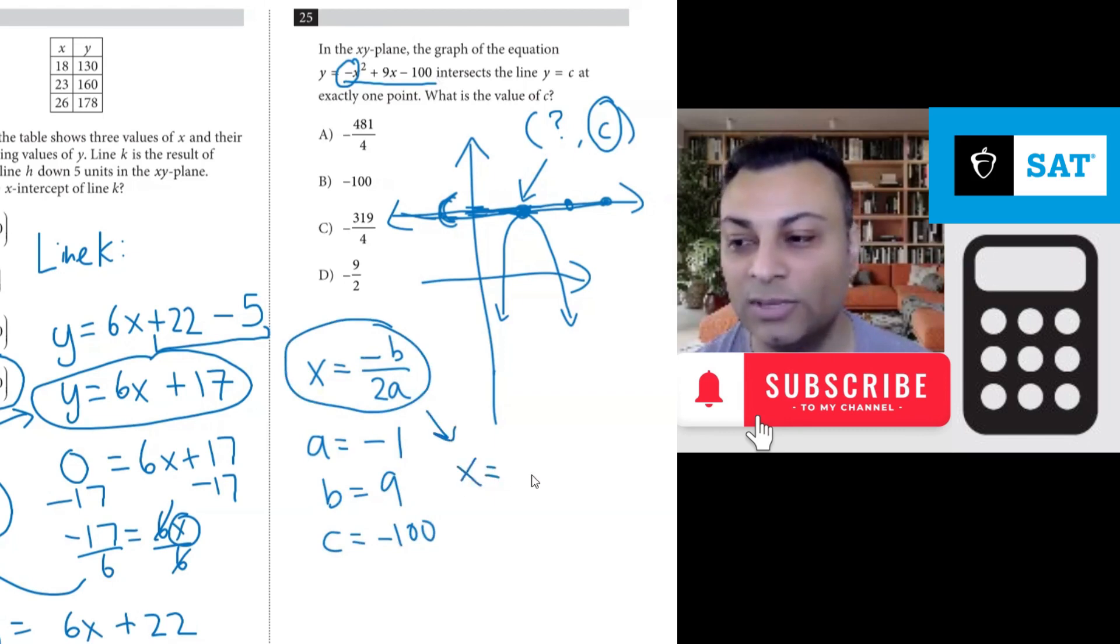x equals now it's negative b over 2a. Let's be very careful. The b is 9 so that goes here. And the a is negative 1 so that goes here. This ends up being negative 9 over negative 2 or simply 9 over 2. But that is this x coordinate 9 over 2.